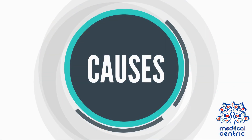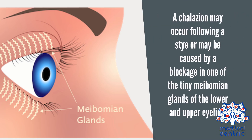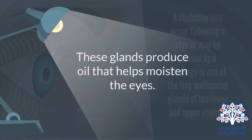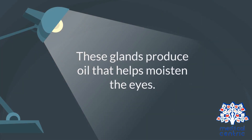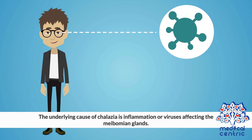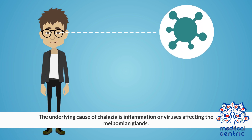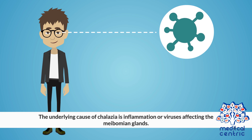Causes: A chalazion may occur following a stye or may be caused by a blockage in one of the tiny meibomian glands of the lower and upper eyelids. These glands produce oil that helps moisten the eyes. The underlying cause of chalazia is inflammation or viruses affecting the meibomian glands.